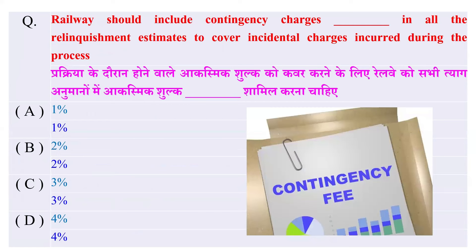Railway should include contingency charges — how much percentage in all relinquishment estimates to cover incidental charges incurred during the process? प्रक्रिया के दौरान होने वाले आकस्मिक शुल्क को cover करने के लिए Railway को सभी त्याग अनुमानों में आकस्मिक शुल्क कितना प्रतिशत शामिल करना चाहिए? Options: एक, दो, तीन, या चार प्रतिशत — और सही उत्तर है तीन प्रतिशत।